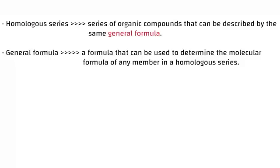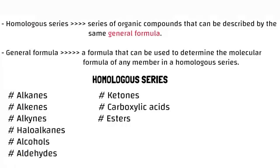The homologous series I'm going to touch on will be nine — so that's nine families. We have alkanes, alkenes, alkynes, haloalkanes, alcohols, aldehydes, ketones, carboxylic acids, and lastly esters. These are the homologous series we're going to touch on.